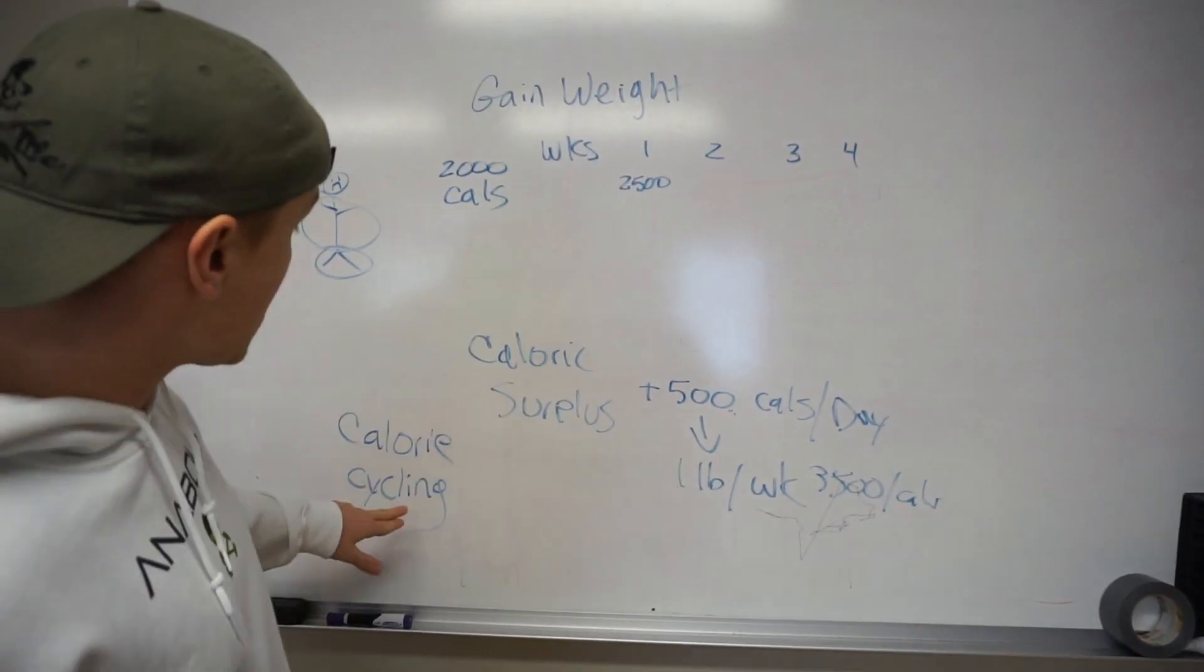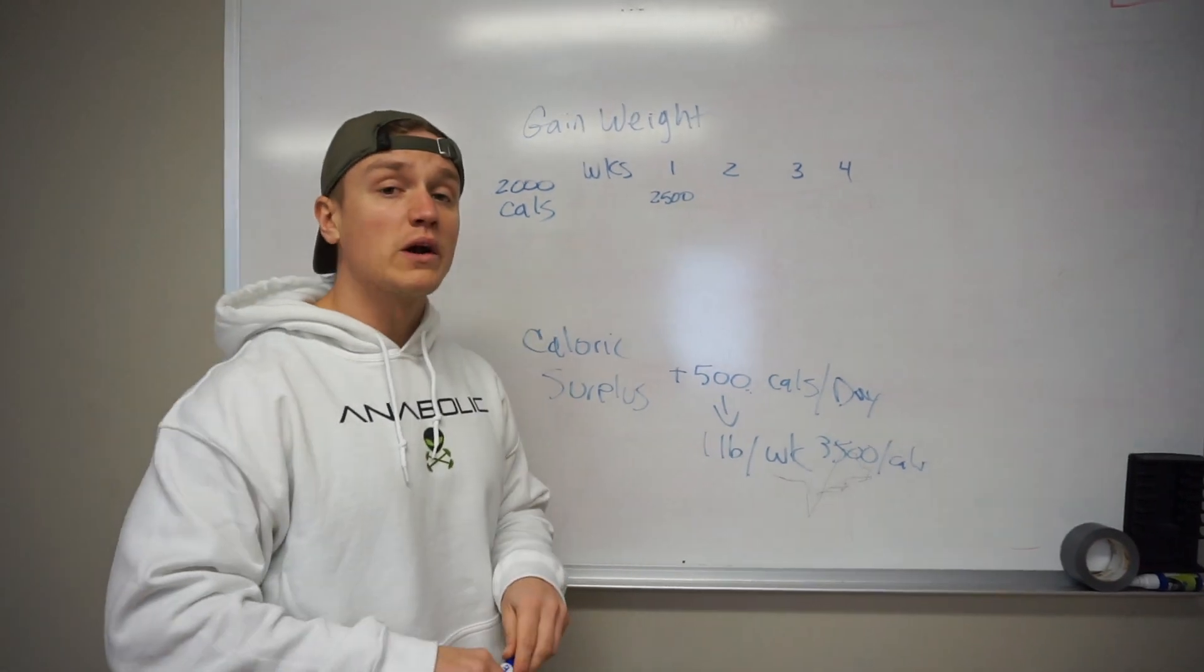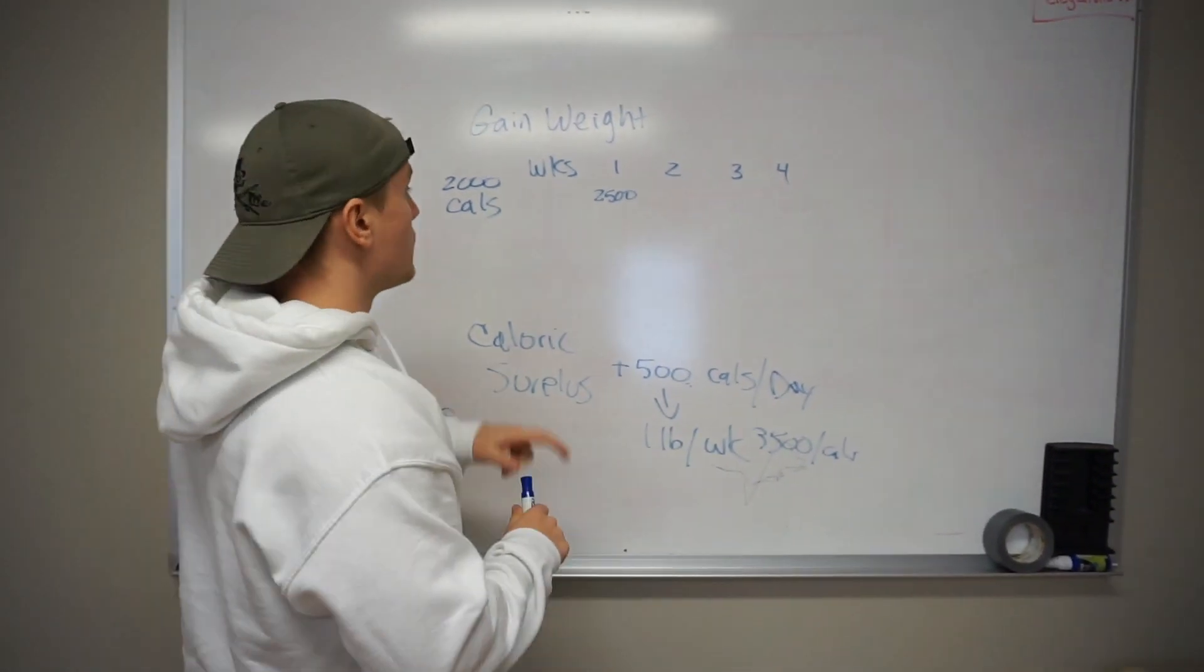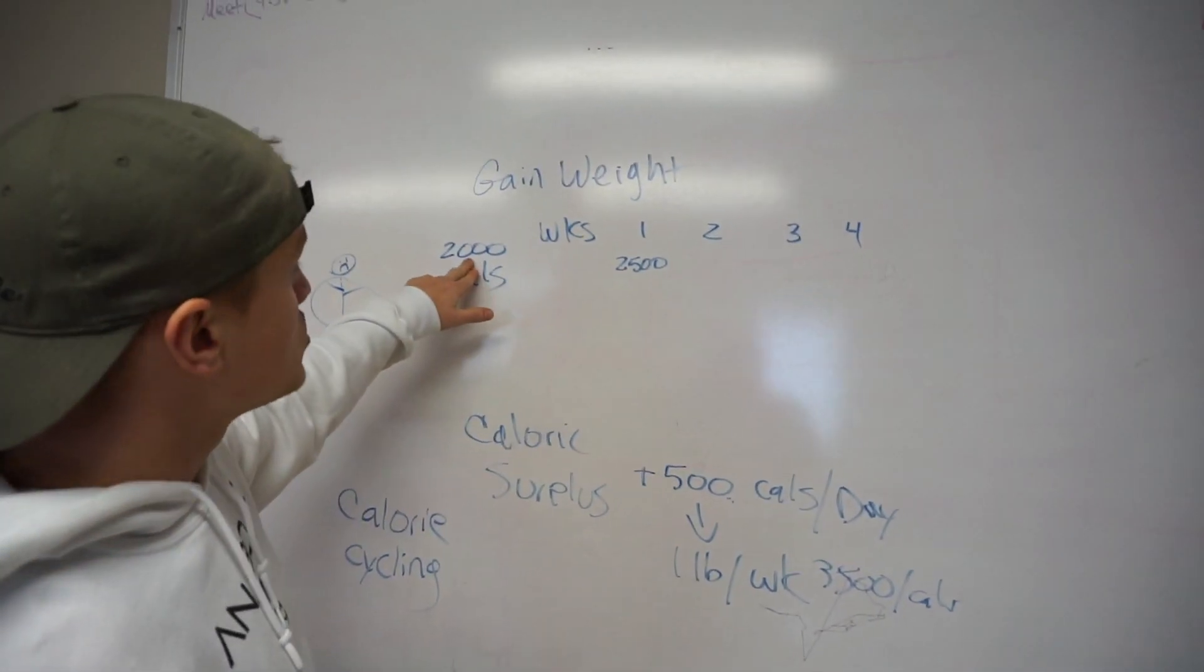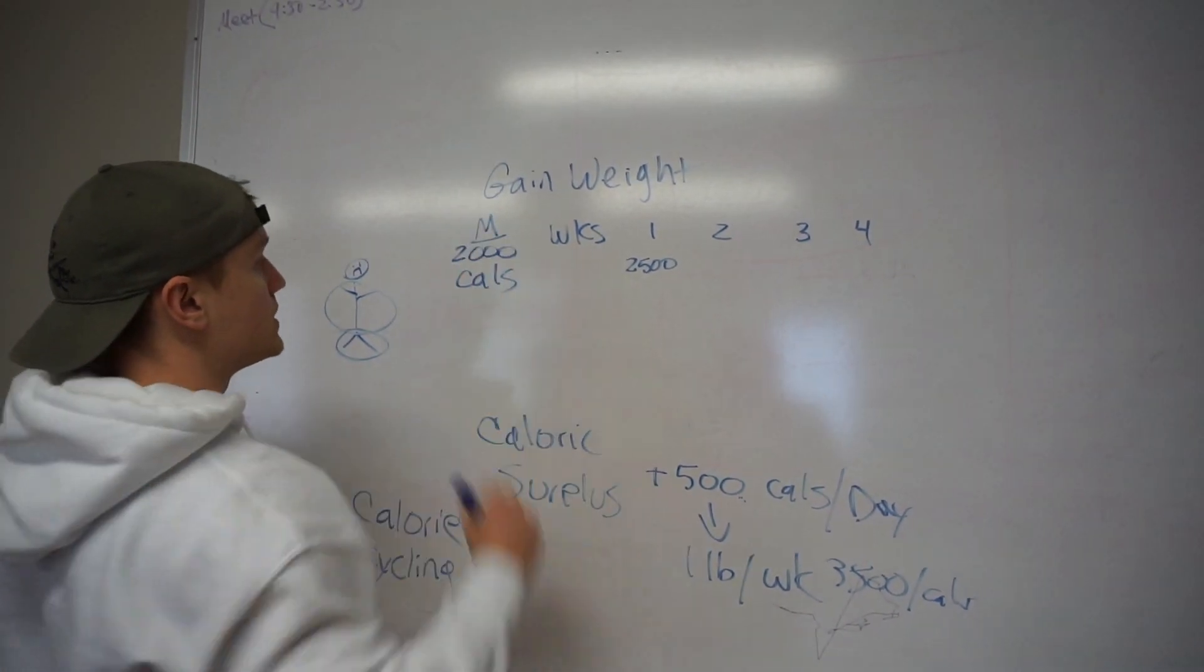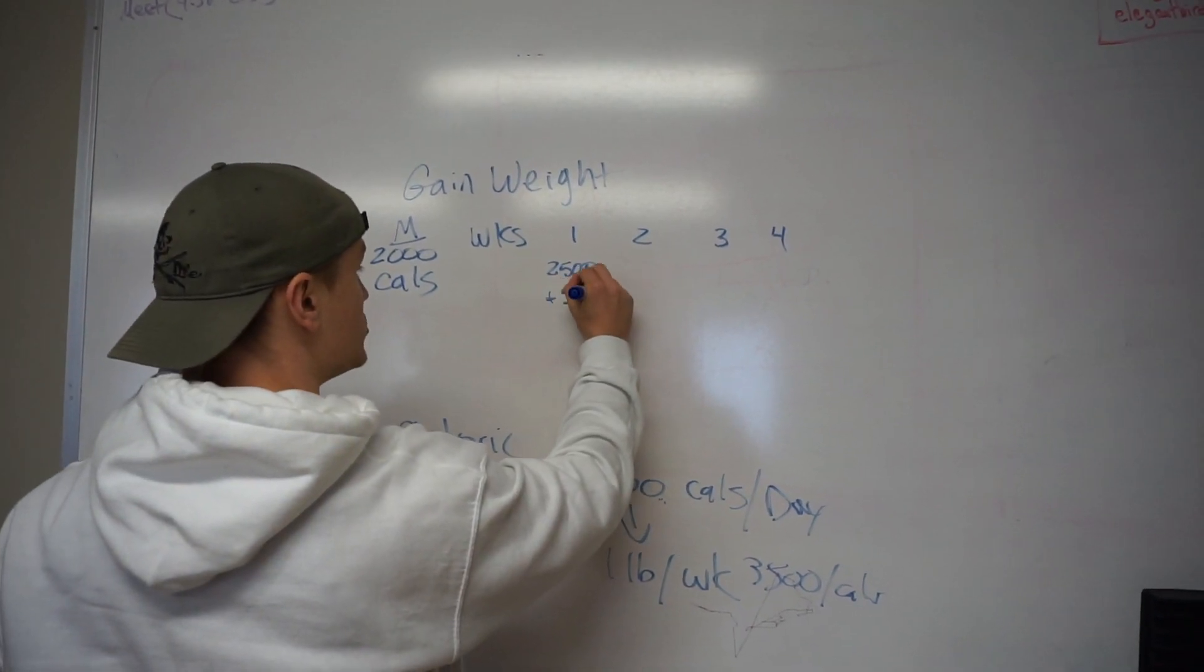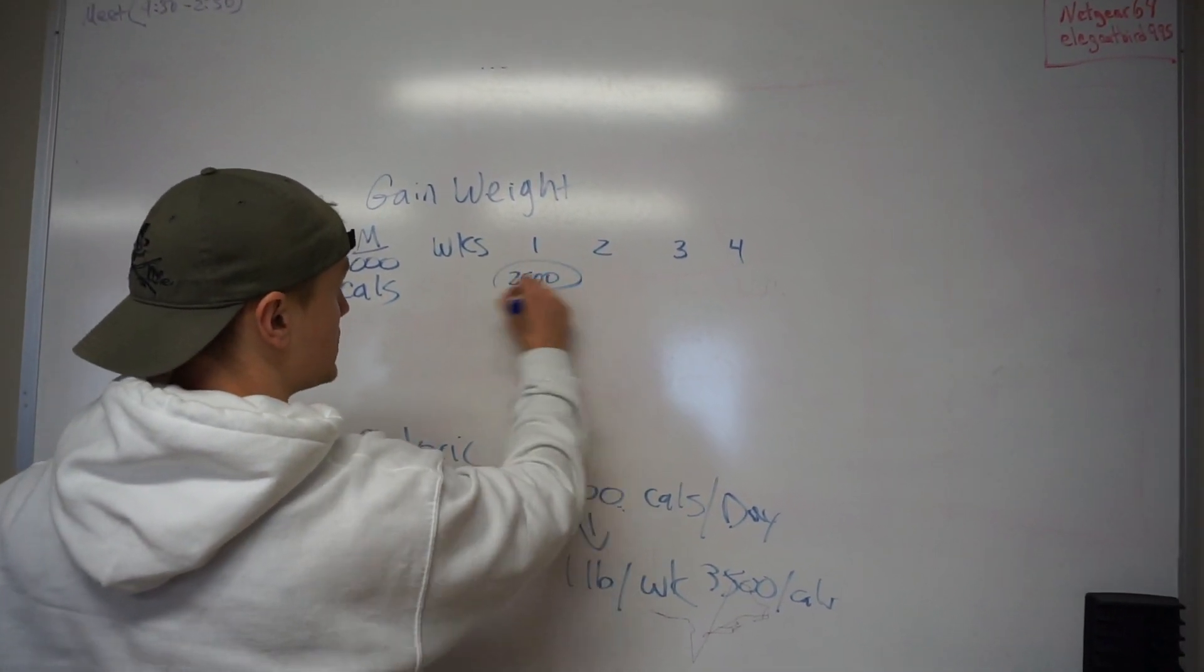So what we're doing here is we're calorie cycling. The amount you cycle can vary, but for the sake of this video, we're going to keep it very subtle. Week one, we were at 2,000 calories. That's our maintenance. We're plus 500 now. That's how you get this number.